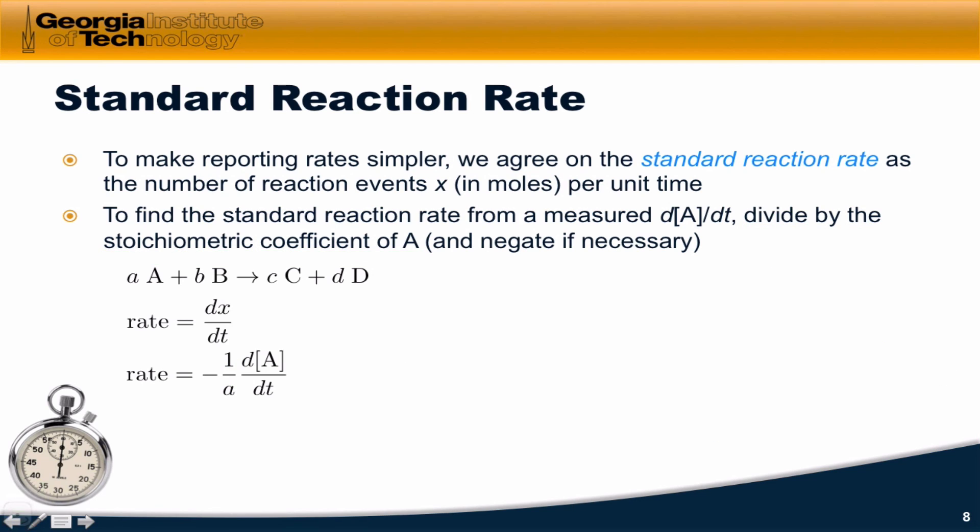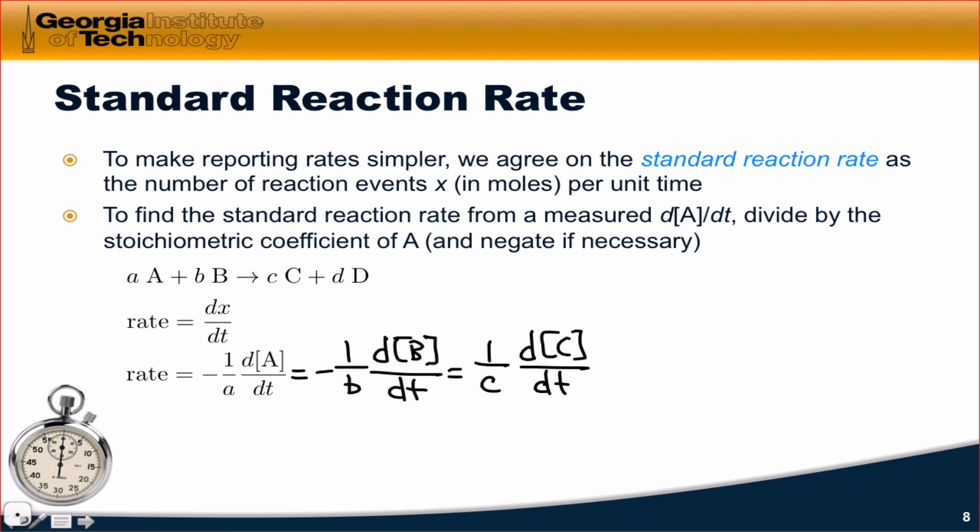So here's that equation that we just derived. The rate is equal to negative 1 over a dA/dt, and we could write this in a variety of ways using any of the other reactants. Negative 1 over b dB/dt, for example. If it was more convenient to measure the concentration of b, we could use this. We could do 1 over c dC/dt, looking at the concentration of product coming in, product c. And finally, 1 over d dD/dt. All of these are numerically equal to the standard rate, which is dx/dt, the rate of change of reaction events with time.